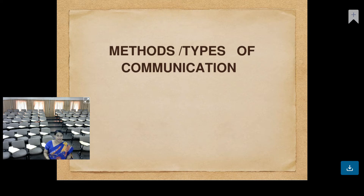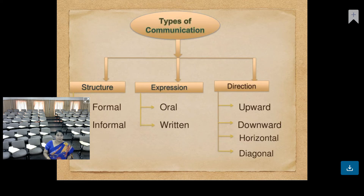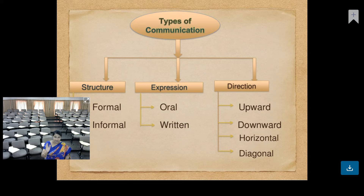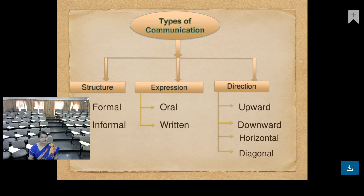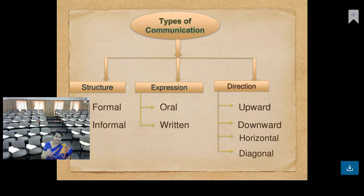Let me start with the method or type of communication. The types of communication can be broadly classified into 3 categories on the basis of structure, expression, and direction. On the basis of structure, organization structures are of 2 types — formal and informal — so communication is also of 2 types: formal communication and informal communication.